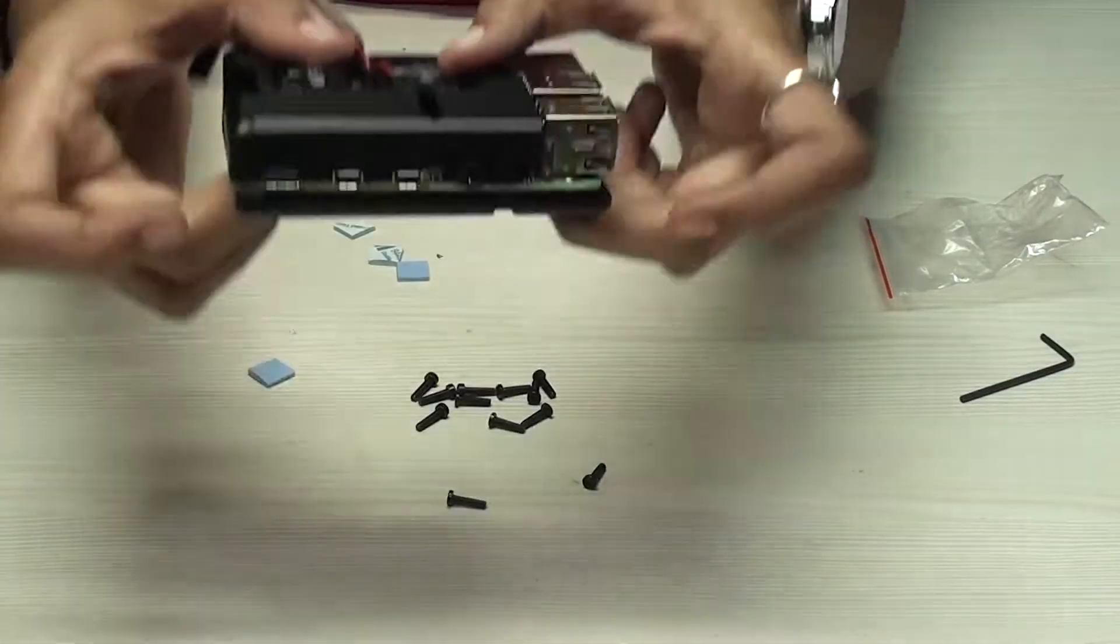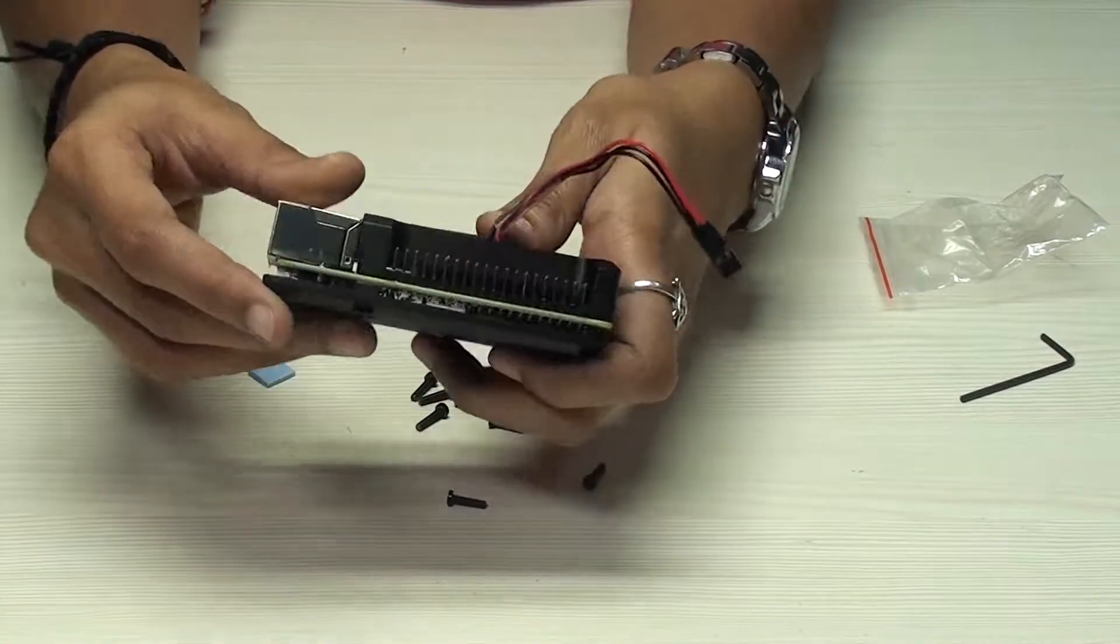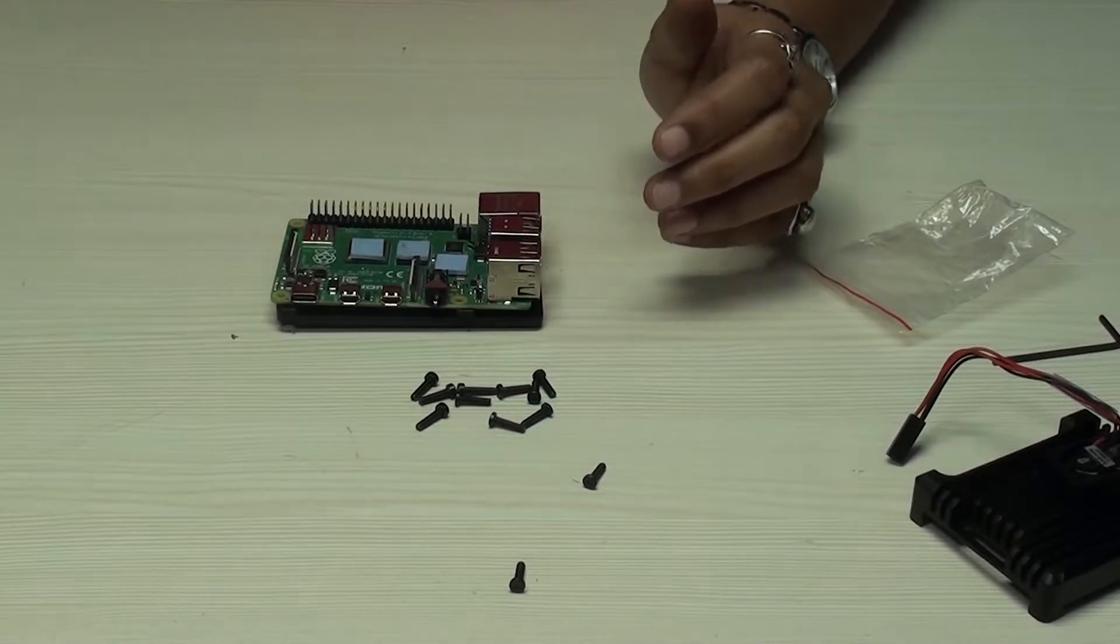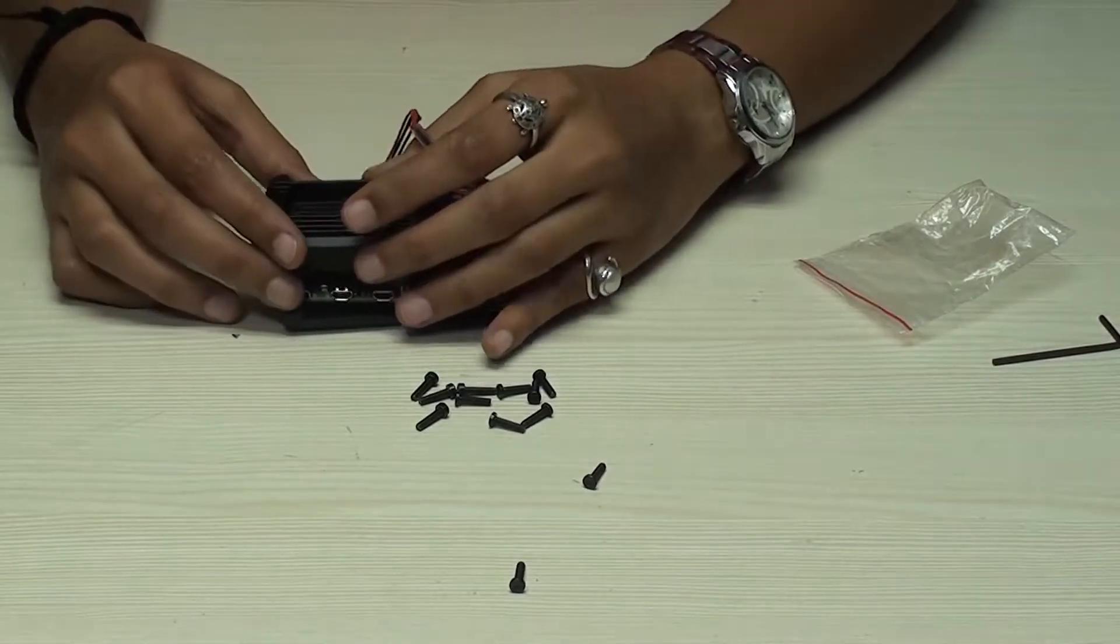So you can see here the casing fits perfectly with the Raspberry Pi 4 Model B. These thermal tapes are stuck to the same places as we stuck earlier. Now we'll fix this case.